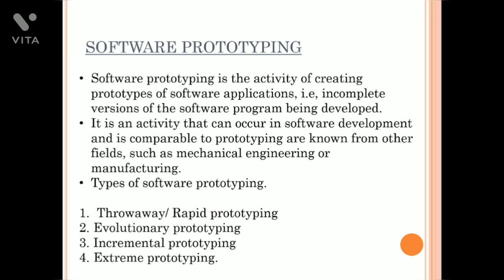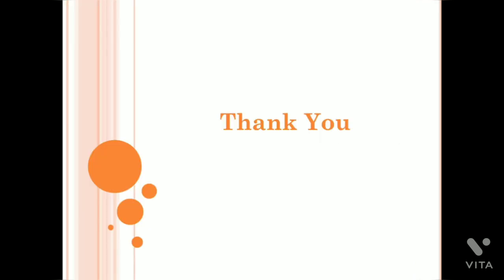Software Prototyping is the activity of creating prototypes of software applications, i.e., incomplete versions of the software program being developed. It is an activity that can occur in software development and is comparable to prototyping known from other fields such as mechanical engineering or manufacturing. The types of software prototyping are throwaway or rapid prototyping, evolutionary prototyping, incremental prototyping, and extreme prototyping. This is about the prototyping of electronics product design.